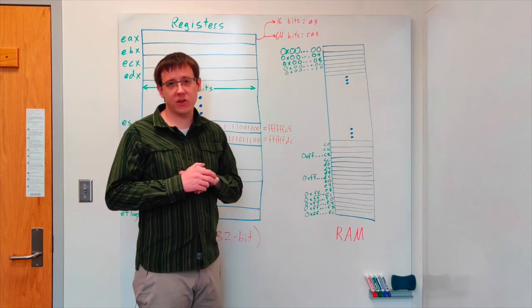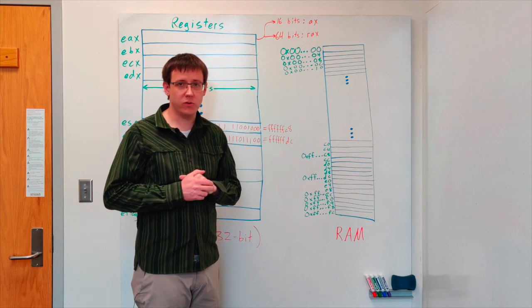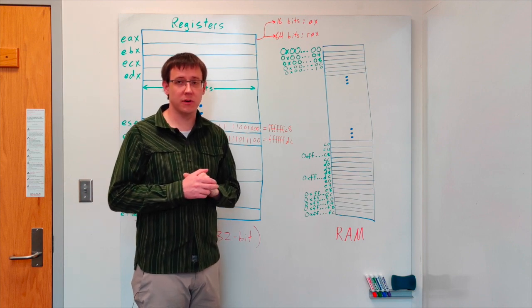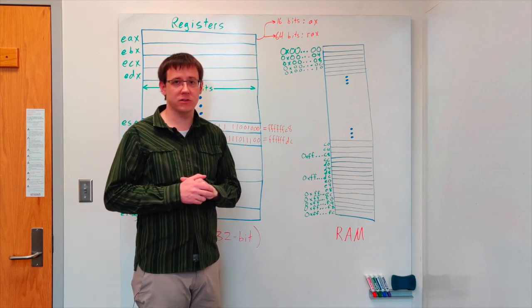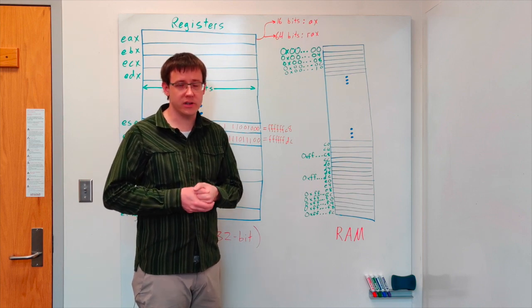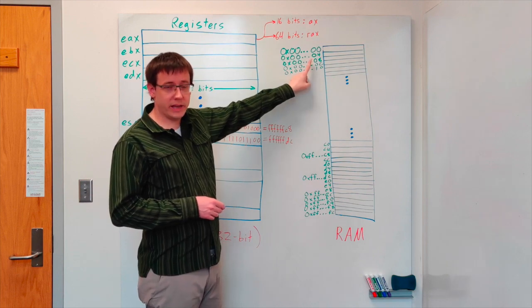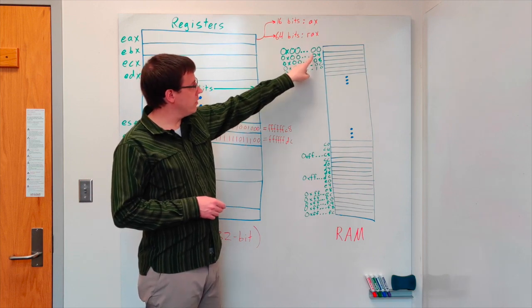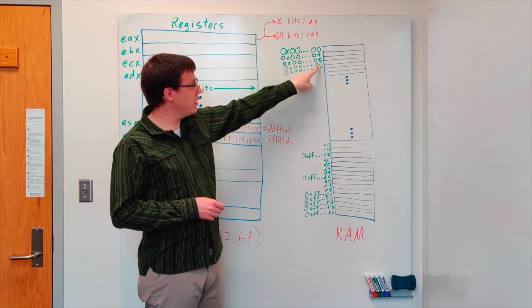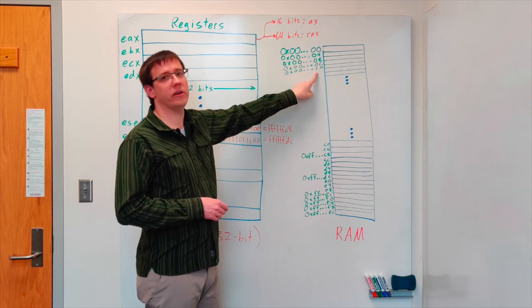In memory every byte gets its own address but if we're working with 32-bit values we'll usually work in chunks of four bytes because one byte is eight bits so 32 bits is four bytes. That means that the addresses that we'll think about usually advance by four.